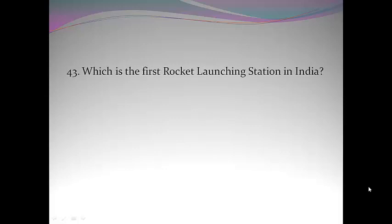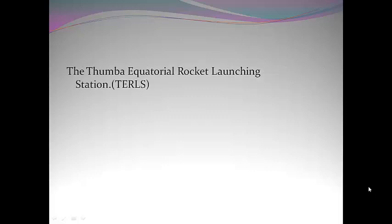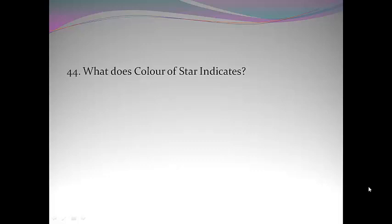43. Which is the first rocket launching station in India? Tumba Equatorial Rocket Launching Station. 44. What does color of star indicates? Its temperature.